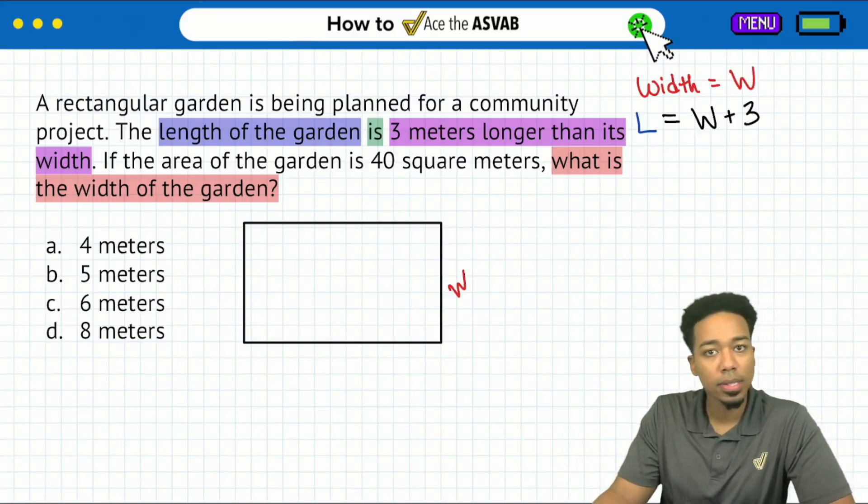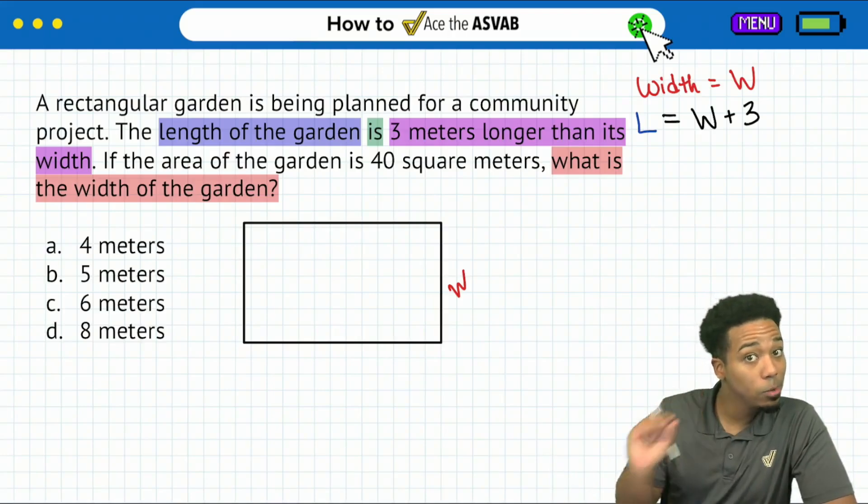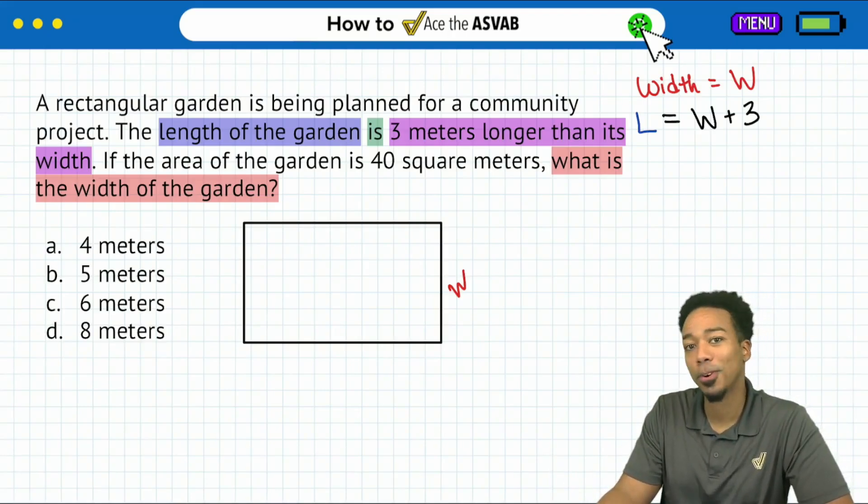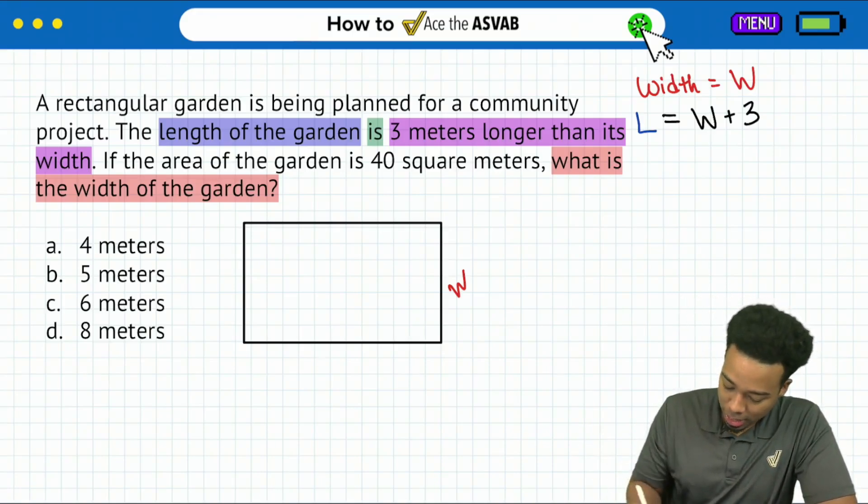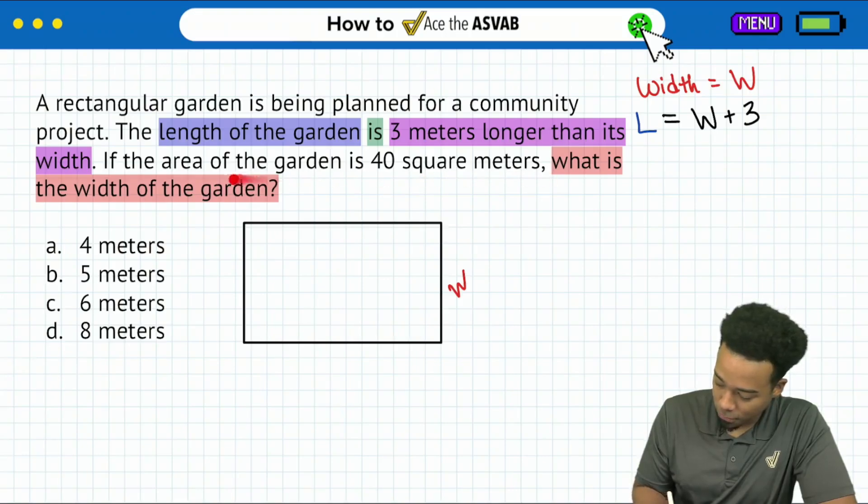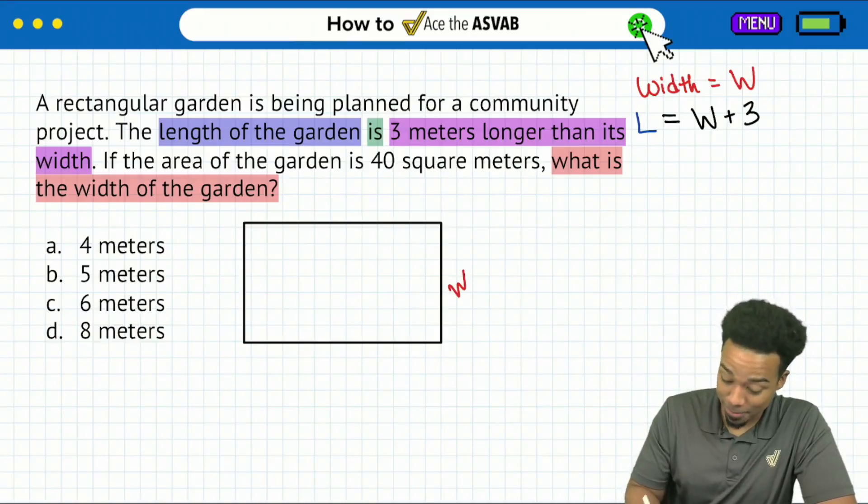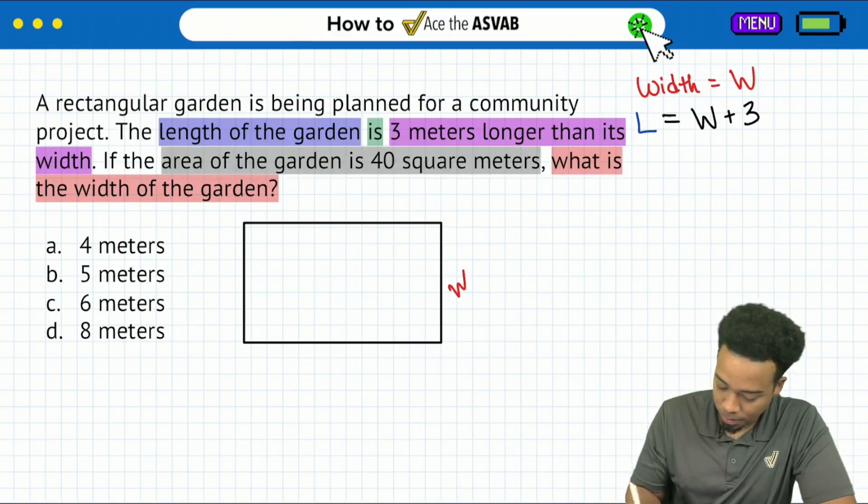So what do we do next? Don't forget, we still have a little piece of information that's actually super important. It's what's going to bring everything together. We are told that the area of the garden is 40 square meters. That is very, and I mean very important for us, everybody.